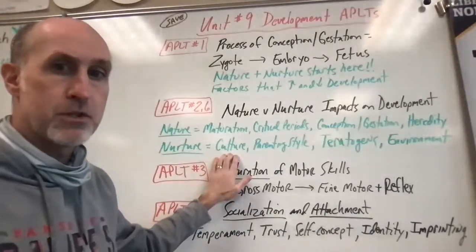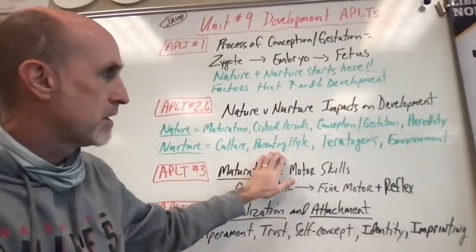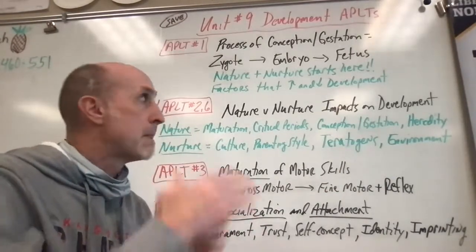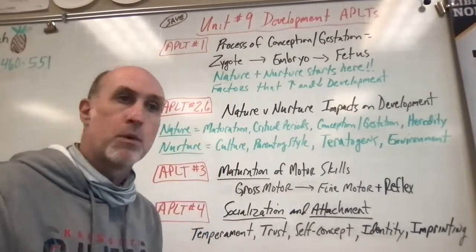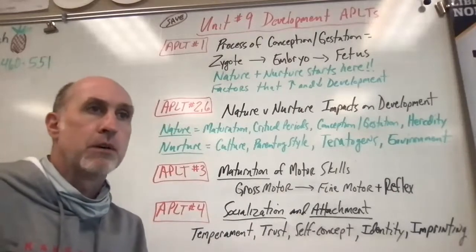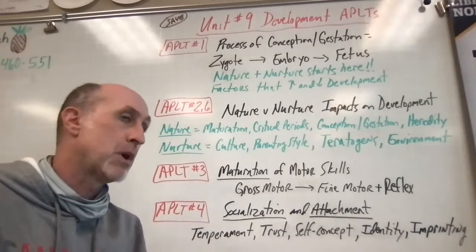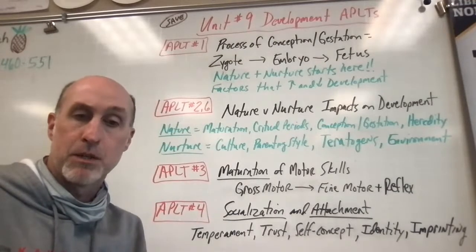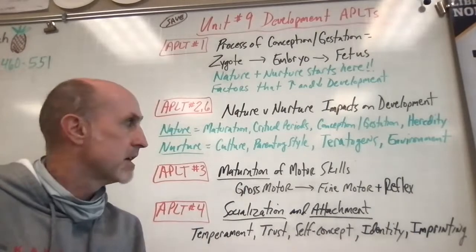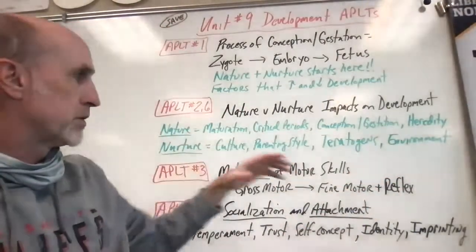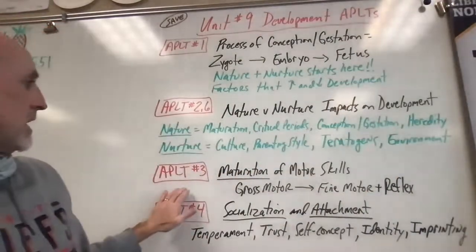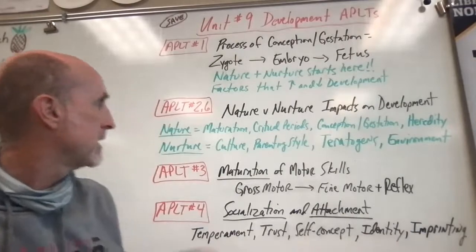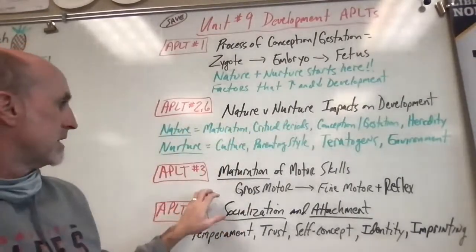AP Learning Target Number 3 is: discuss maturation of motor skills. Maturation is biological pre-programmed growth. We develop in a biological sequence that's already pre-programmed — we all might learn to walk at different ages, with the average being 9 to 12 months, but we're all going to do it in the same order through the same stages. The general sequence is gross motor — the ability to move big muscles — which leads to fine motor, the ability to coordinate larger and smaller muscles for complex movements.